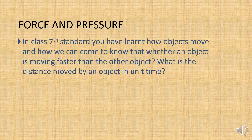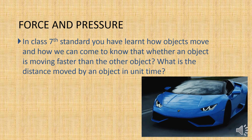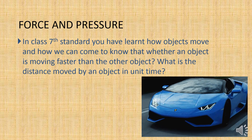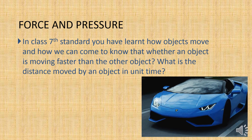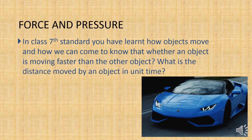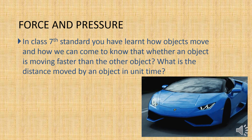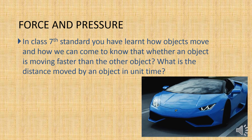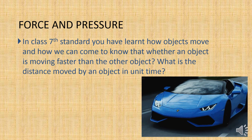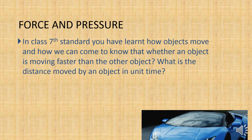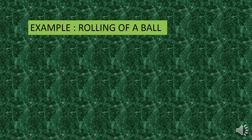In 7th standard, you have learnt how objects move and how we can come to know whether an object is moving faster than another object, and what is the distance moved by an object in unit time. This is the basic information we have from 7th standard. In 8th standard, we are going to discuss some more points about force and pressure. So, before we start the main topic, let us take some examples.